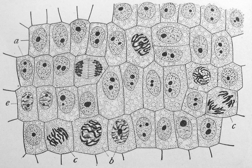All cells, whether prokaryotic or eukaryotic, have a membrane that envelops the cell, regulates what moves in and out, and maintains the electric potential of the cell. Inside the membrane, the cytoplasm takes up most of the cell's volume. All cells except red blood cells — which lack a cell nucleus and most organelles to accommodate maximum space for hemoglobin — possess DNA, the hereditary material of genes, and RNA, containing the information necessary to build various proteins such as enzymes, the cell's primary machinery.